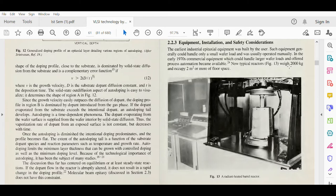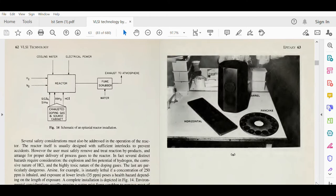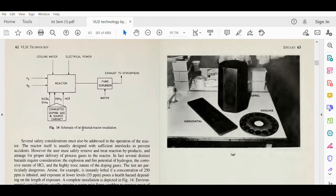Now typical reactors weigh 2000 kilograms and occupy two meter square or more of the floor space. This is the radiant heated barrel reactor used in the industry. This can weigh 2000 kilograms and occupies two meter square or more of the floor space, a bigger equipment.